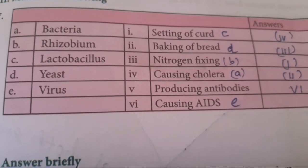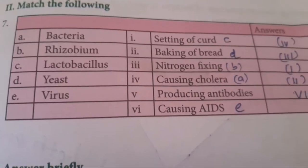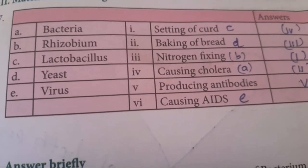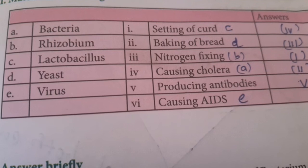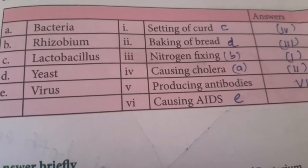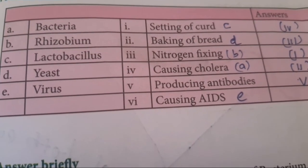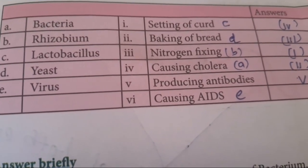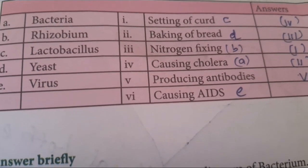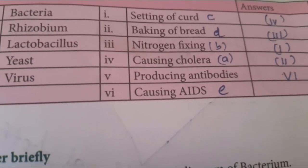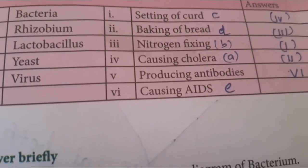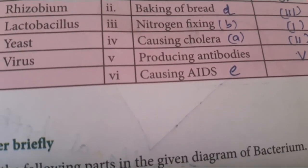Matching exercise: Bacteria — causing cholera. Rhizobium — nitrogen fixing. Lactobacillus — setting of curd. Yeast — baking of bread. Virus — causing AIDS. The answers are 4, 3, 1, 2, 6.